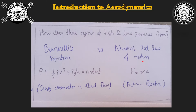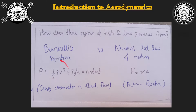Welcome back. In the previous lecture, I asked you why this airfoil creates a region of high pressure and low pressure. There are two main contenders here: the first one is Bernoulli's equation, and the next one is Newton's third law of motion. Bernoulli's equation says that pressure energy plus kinetic energy per unit volume plus potential energy per unit volume remains constant along a streamline. This is generally an energy conservation equation in fluid flow.